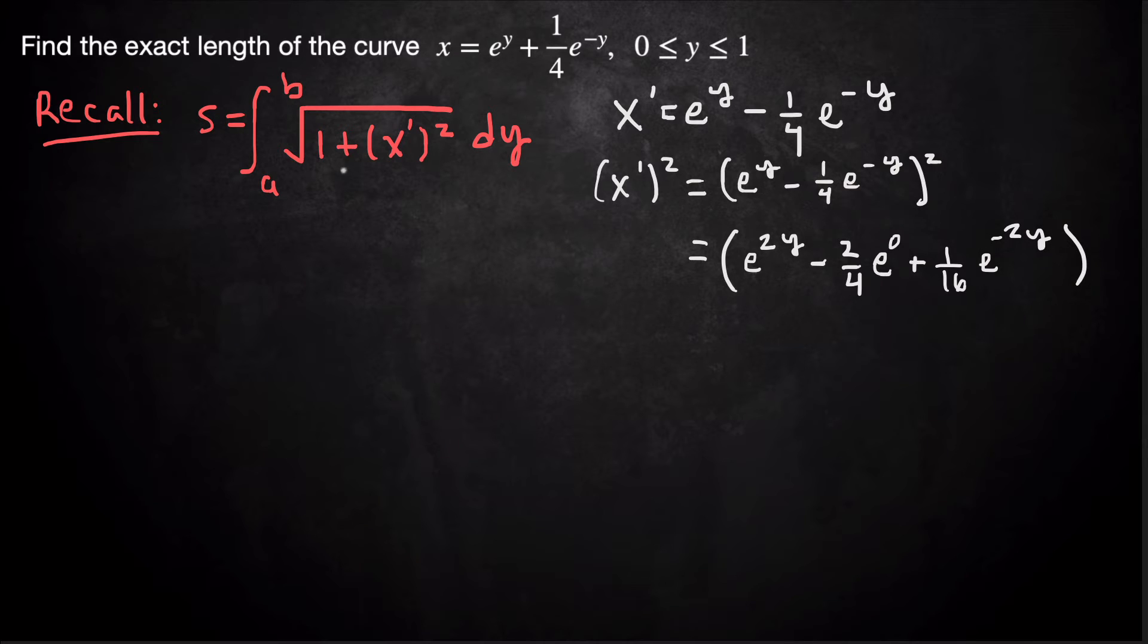Now, under the radical, we have 1 + (x')², so add 1 to this term. So 1 + (x')². Well, if I add 1... All right, so now we can simplify this a little bit. That middle term just becomes -1/2. So that's e^(2y) - 1/2 + 1/16 e^(-2y).